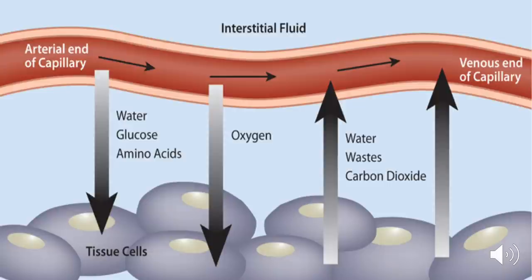Shown here is a capillary surrounded by cells. Water, glucose, and amino acids are diffusing out of the capillary toward the cells, and the space through which they flow to reach the cells is the ground substance. On the other hand, waste products and carbon dioxide are also diffusing away from the cell into the capillary via the ground substance.